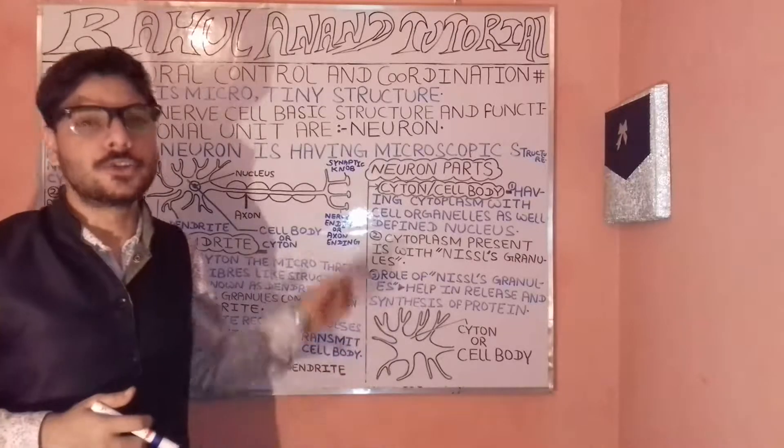Today we are going to study about the neuron. So what are actually neurons? Neurons are the tiny structures of nerve cells. The structural and functional unit of your nerve cells is known as the neuron.